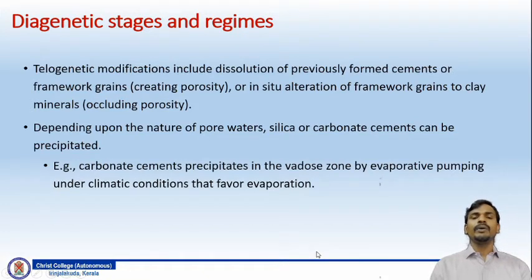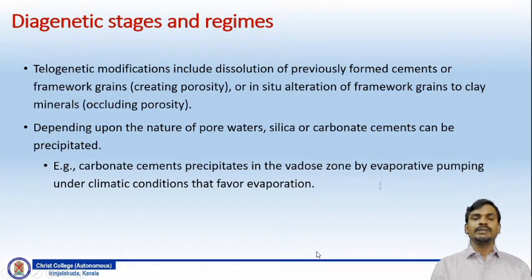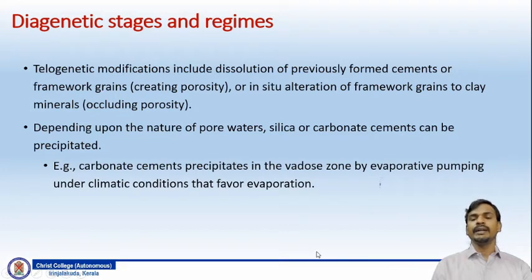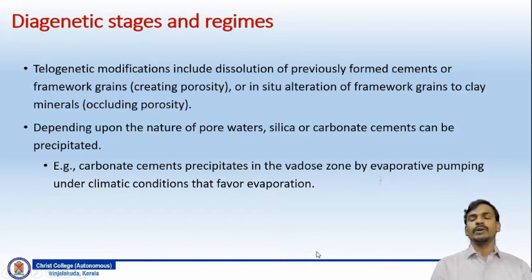Depending upon the nature of the pore waters, silica or carbonate cements can be precipitated. For example, carbonate cements precipitate in the vadose zone by evaporative pumping under climatic conditions that favor evaporation — meaning under arid conditions, you can have the precipitation of carbonate cements in the vadose zone.